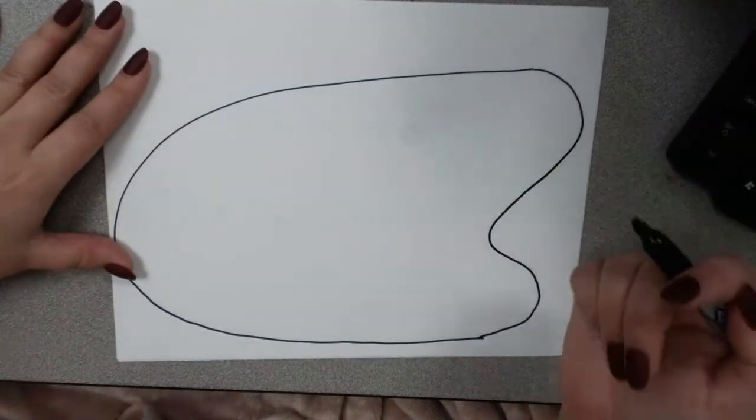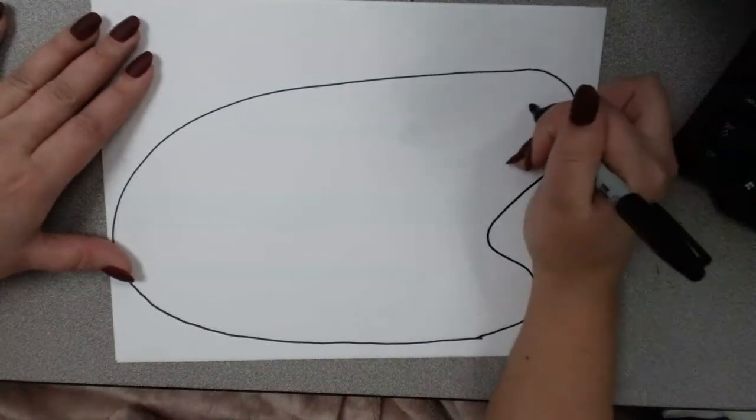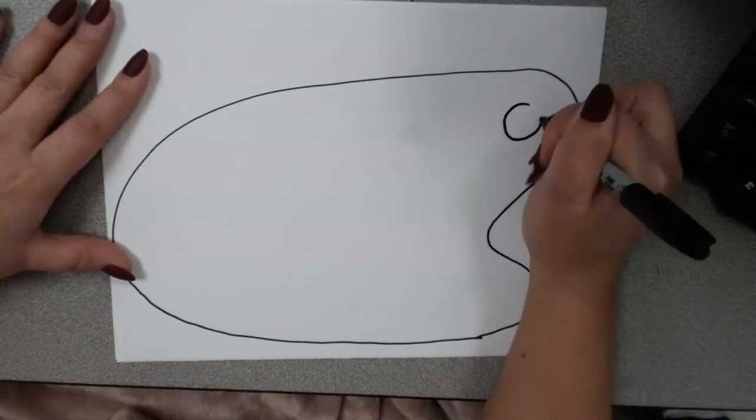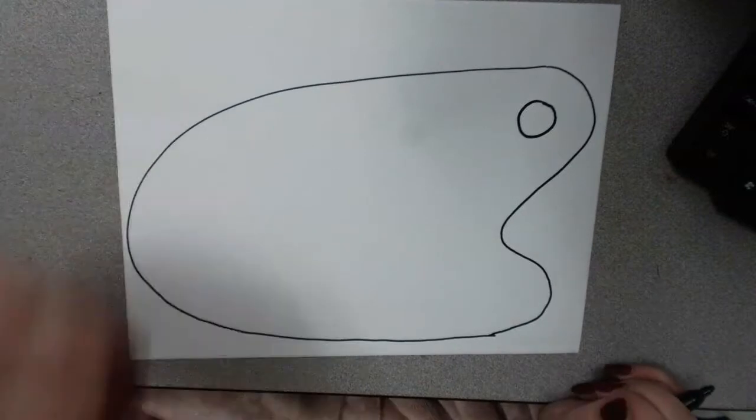Then there's the part where your finger goes in to hold the palette, so there's a hole there. We're going to draw a circle for that. There we go.